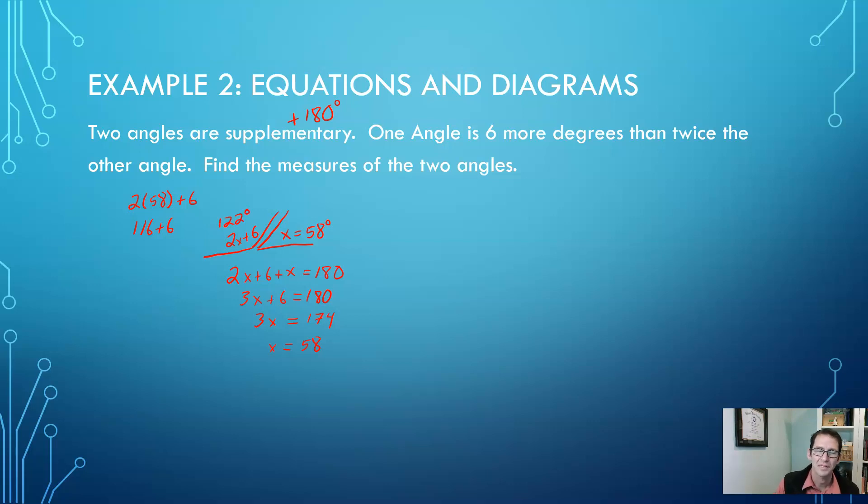Now it's always good practice when you finish a math problem to check your work and see if what you did is right. So we can check this to see if they're supplementary. So 122 degrees, add that to 58 degrees, and 8 plus 2 is 10, and yes, sure enough, we have supplementary angles. They add to 180 degrees.